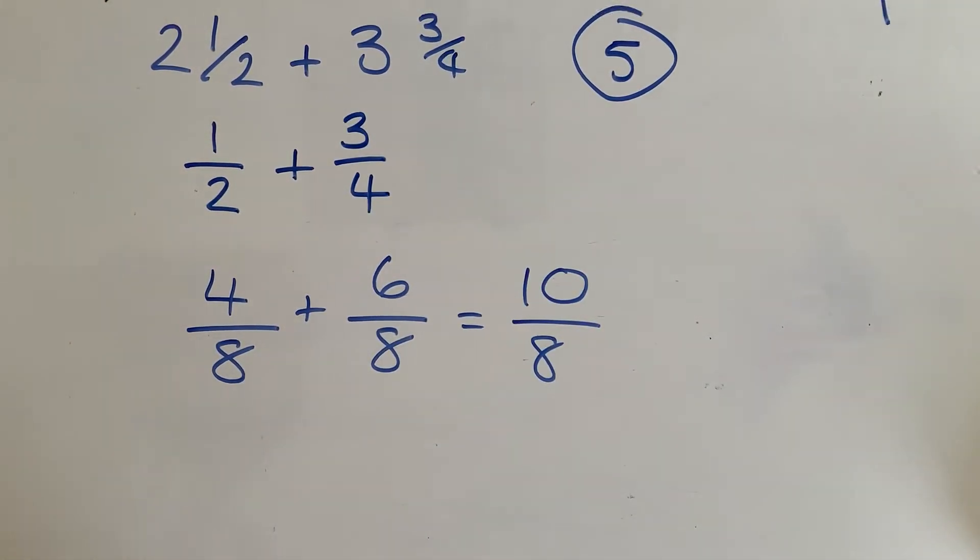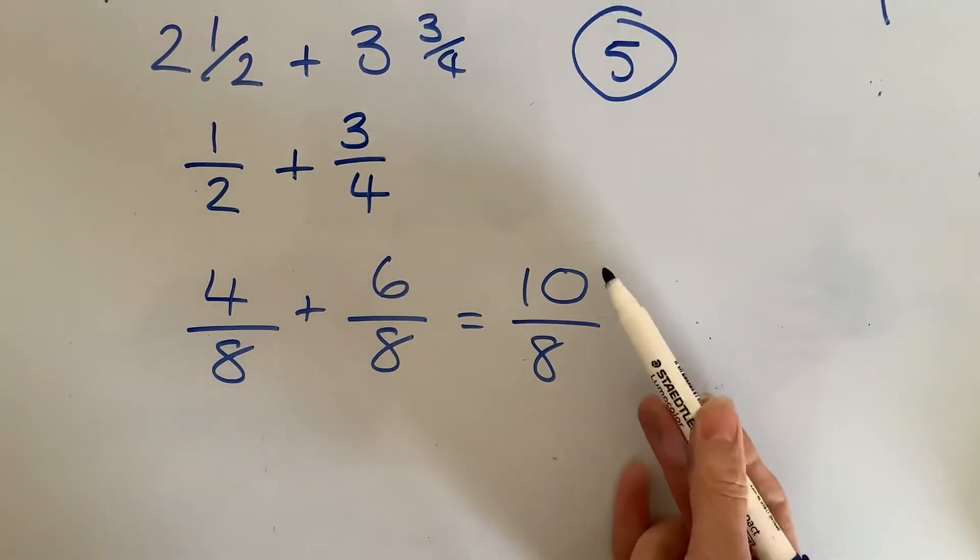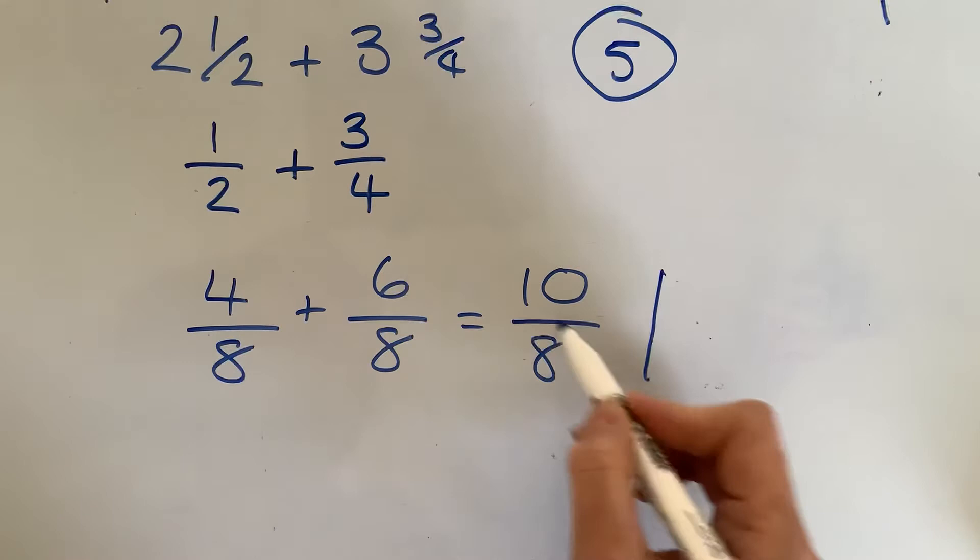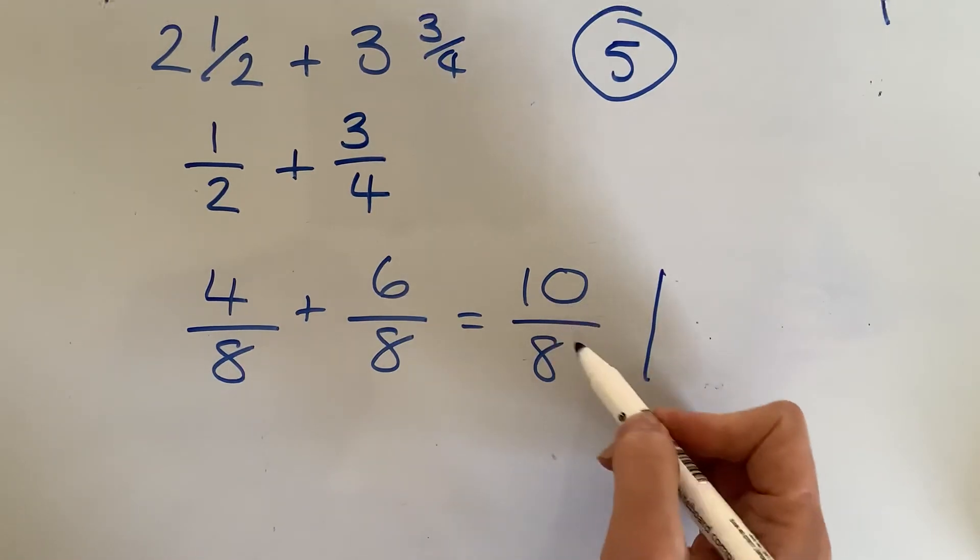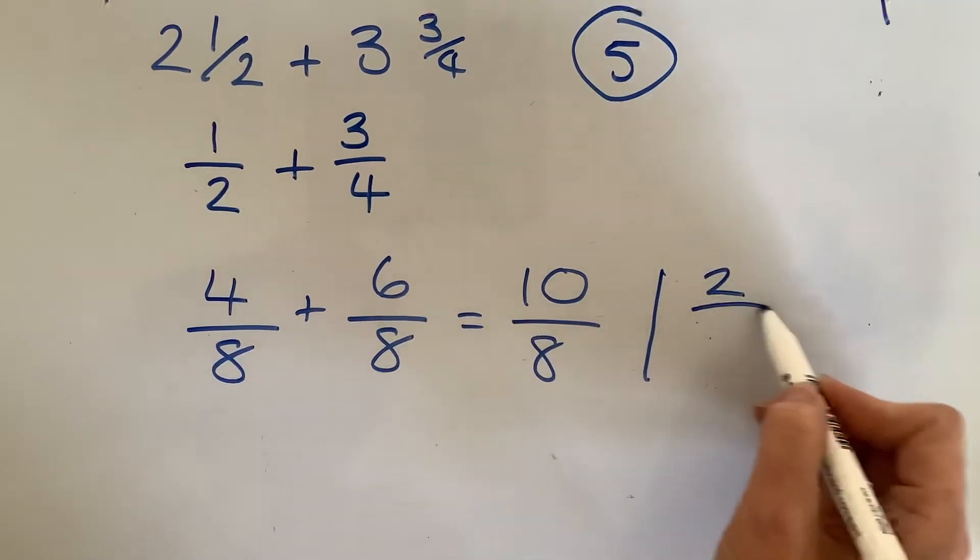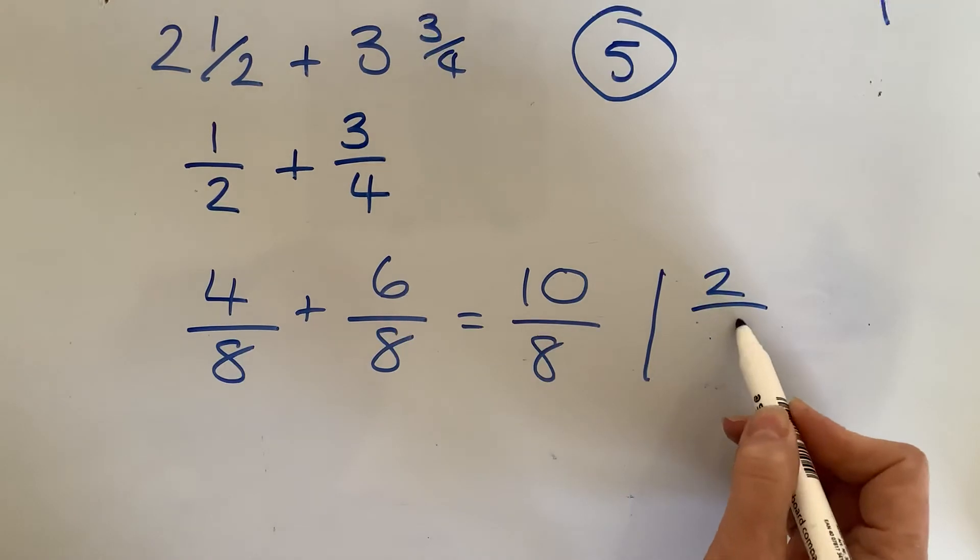You're expected to demonstrate that you can put that into mixed numbers again. So we say how many 8's are in 10, 1 and what's left over, 10 take away 8 is 2, 1 and 2 over 8.